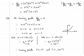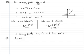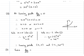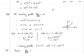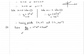In part c we're asked to find d²y/dx². Let's copy back that dy/dx equals x²eˣ + 2xeˣ. We can now find d²y/dx² by differentiating that expression with respect to x.